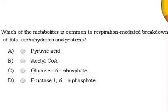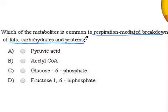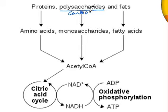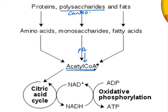The question is related to respiratory breakdown of fats, carbohydrates, and proteins. To understand this, let us see this flow chart. Normally, the respiratory substrate is a polysaccharide or a carbohydrate. This carbohydrate undergoes glycolysis and pyruvic acids are formed. The pyruvic acid then gets converted into acetyl coenzyme A, which participates in the citric acid cycle.